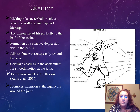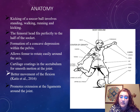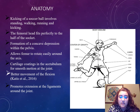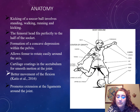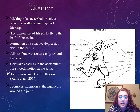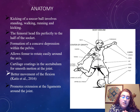The anatomy of kicking a soccer ball involves standing, walking, running, and kicking. The femoral head fits perfectly into the half of the socket. The formation of it is a decreased concave within the pelvis. It allows the femur to rotate easily around the axis. Cartilage coatings on the acetabulum allow for smooth motion at the joint, basically better movement of the flexion, and it promotes extension to the ligaments around the joints.